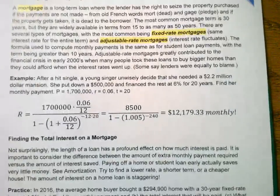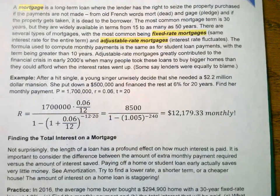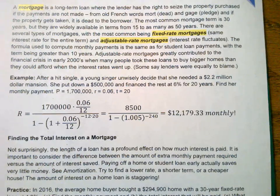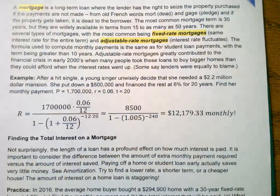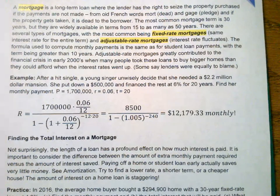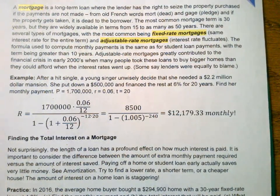Here's a fun example. After a hit single, a young singer unwisely decides that she needs a $2.2 million mansion. She puts down $500,000 and finances the rest at 6% for 20 years — 6% is not the best, 20 years is fine. Find her monthly payments.